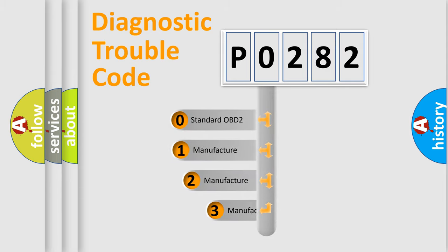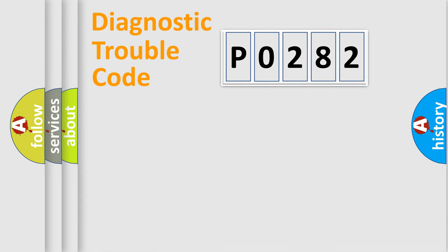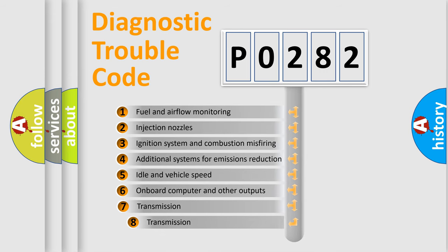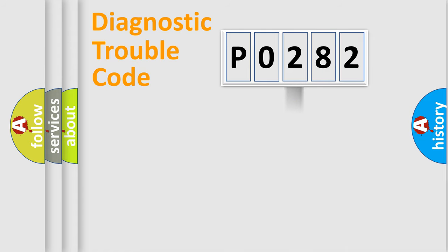If the second character is expressed as zero, it is a standardized error. In the case of numbers 1, 2, or 3, it is a manufacturer-specific expression of the car-specific error. The third character specifies a subset of errors. The distribution shown is valid only for the standardized DTC code.